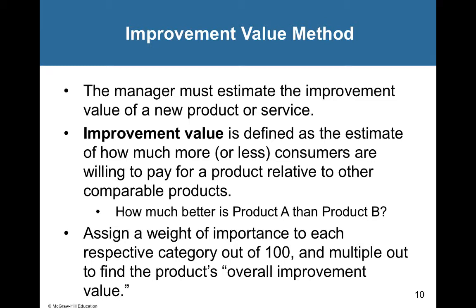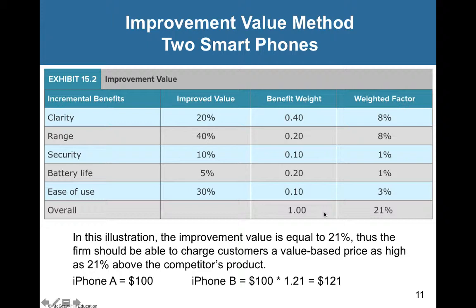The best example for this is the iPhone — think about the iPhone 8 versus the iPhone 10. Is the iPhone 10 really worth that much more, and how do we determine how much more we can charge? We have a table for improvement value to figure this out. For a cell phone, maybe the iPhone 10's battery life is 5% better than the iPhone 8, it's 10% more secure, and 30% easier to use. We look at the improved value and then assign a weight of importance — for example, battery life at 20% importance, security at 10%.